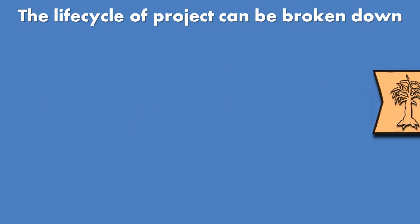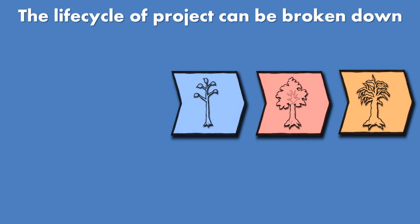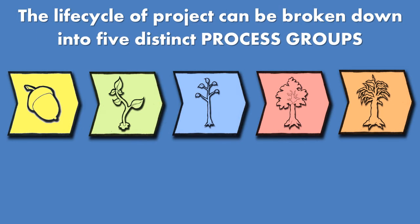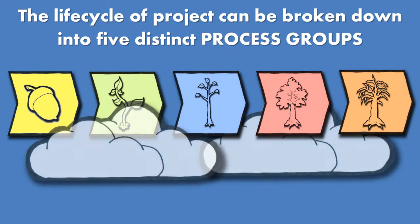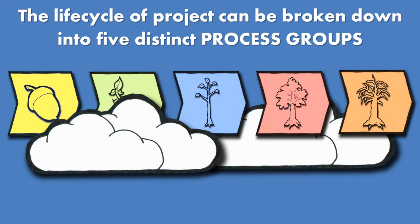The life cycle of a project can be broken down into five distinct process groups that organize a project from start to finish. In this lesson, we'll take a high-level look at each of these process groups and how they depend on each other to guide the project to a successful finish.